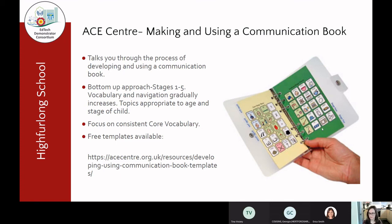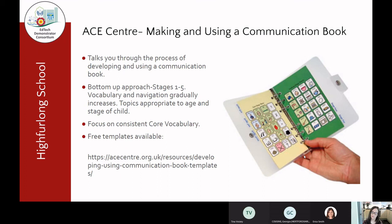The topics are generally appropriate to the age and stage of the child. This example is stage four of the communication book — on the left-hand page we have core words, which are the really important words we use again and again in conversation, basically the building blocks. The thing about the ACE Centre communication book is that you generally have consistent core vocabulary on the left-hand page and then on the right-hand page you have what we refer to as fringe vocabulary. This is more topic-based vocabulary — this is a cookery page with verbs in green, describing words like tasty, hot, cold, and then nouns related to cookery like bowl, sugar, egg. That very consistent layout is really useful when making a communication book.